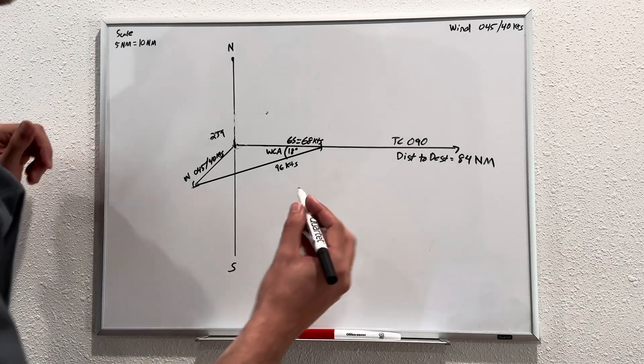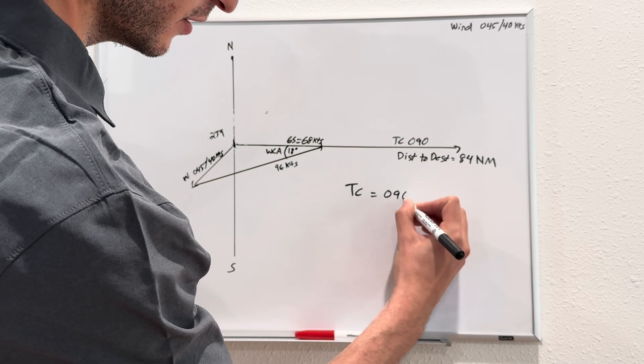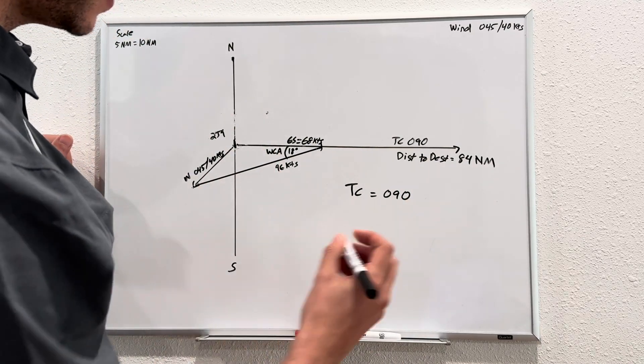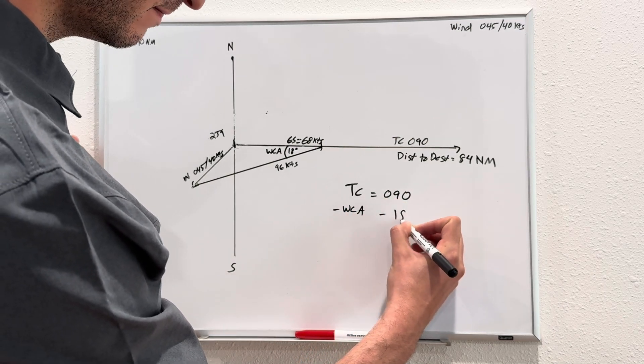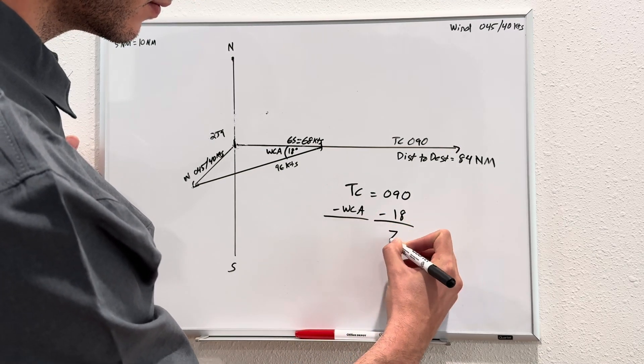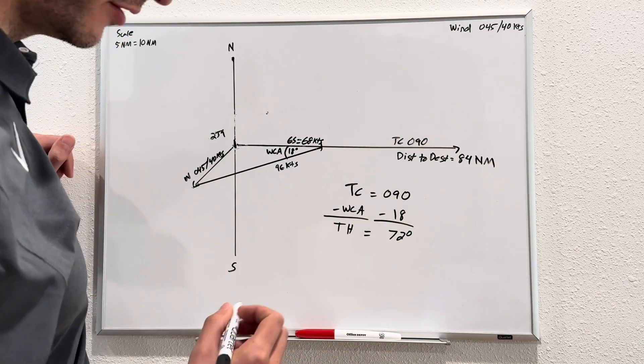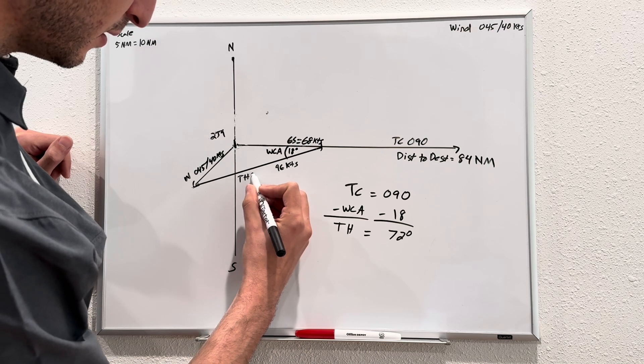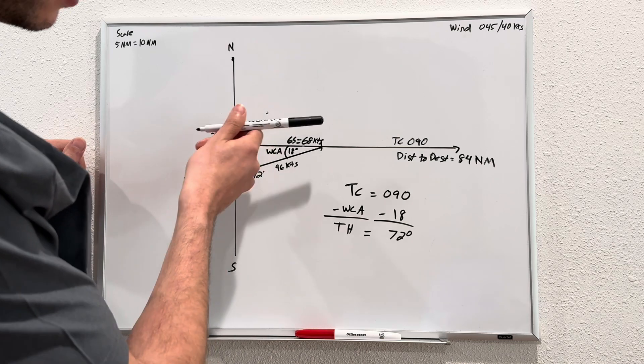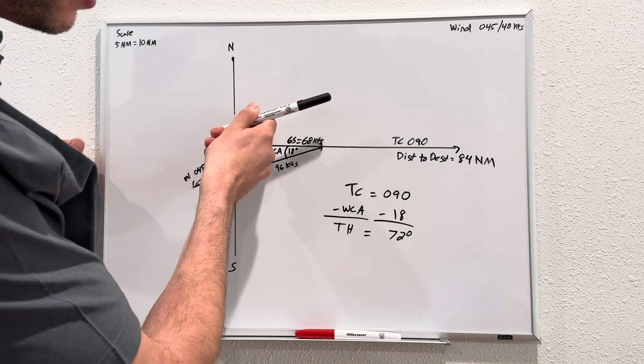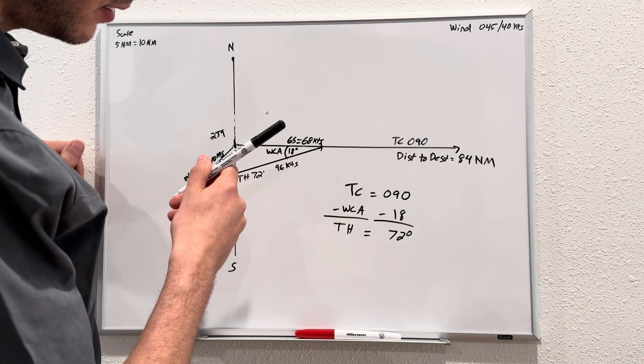Our true course is 090. Our wind correction angle is going to be subtracted, minus 18, and that will give us our true heading of 72 degrees, which is this right here, true heading 072 degrees. If we departed and we crabbed our aircraft on a 072 heading, that would be the correct wind correction angle, wind correction heading.